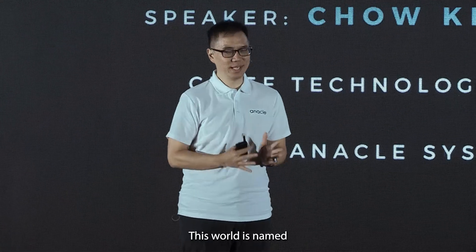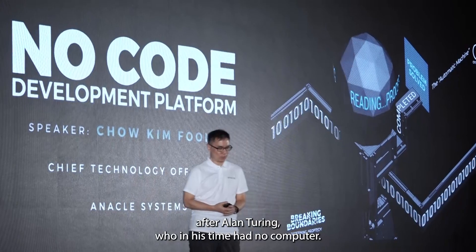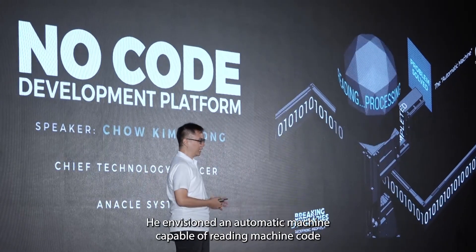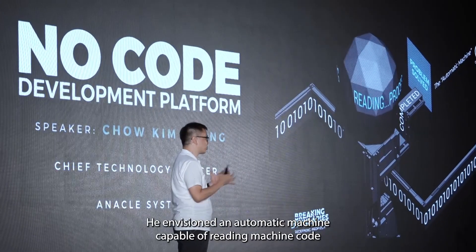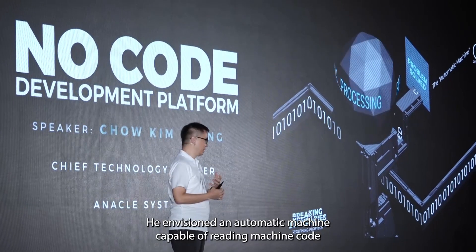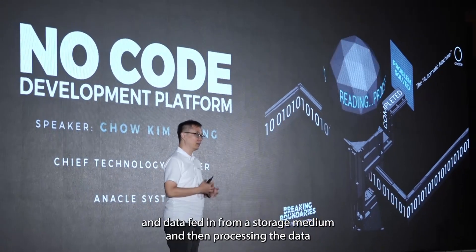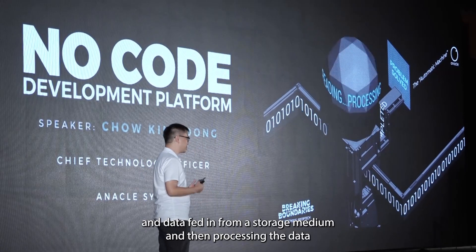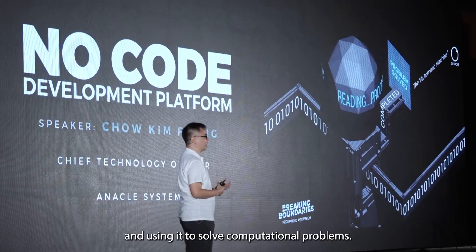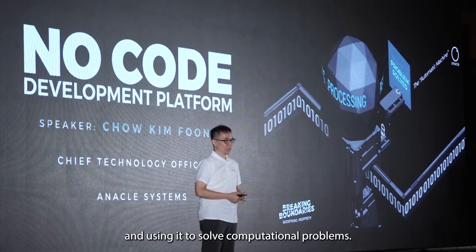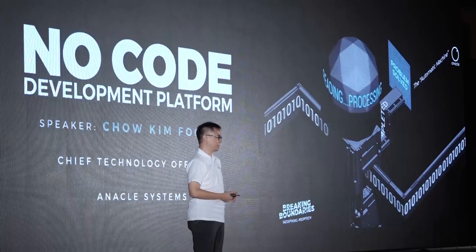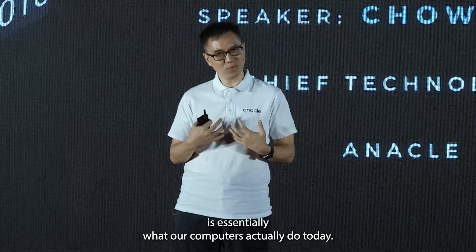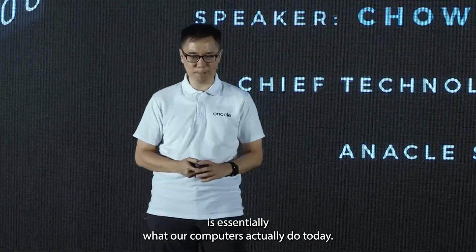This world is named after Alan Turing, who in his time had no computers. He envisioned an automatic machine capable of reading machine code and data fed in from a storage medium, and then processing the data and using it to solve computational problems. So what he envisioned yesterday is essentially what our computers actually do today.